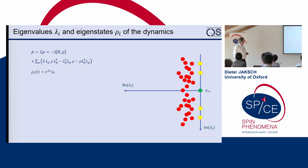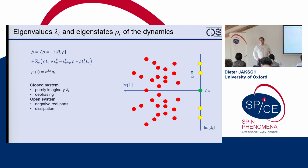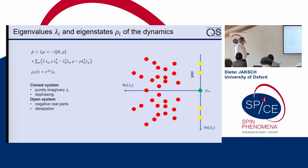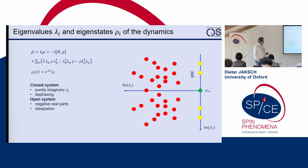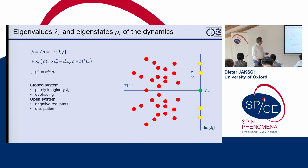As soon as we couple a bath to it, a number of those states attain a negative real part, meaning they will damp out and not be present forever. A large part of these states damp out — the red dots here represent the parts of Hilbert space that after a sufficiently long time are no longer present. Typically, what remains for these types of evolution equations is one stationary state at the origin. This one stationary state is what the system evolves to, and it is usually featureless, like in the driven system examples shown before.